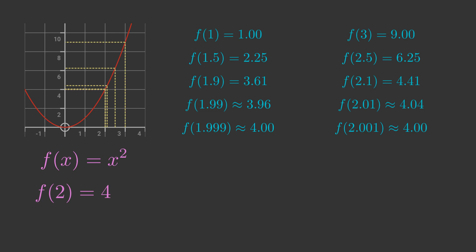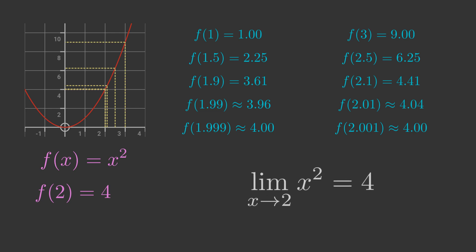We call this a limit. We say that the limit of x squared as x approaches 2 is 4, and this is written using this notation.